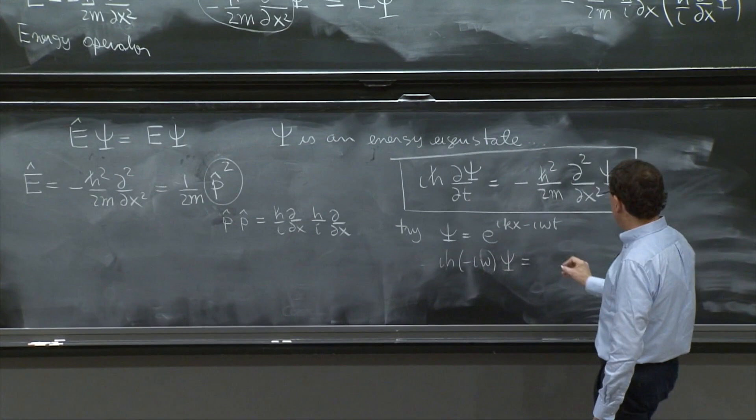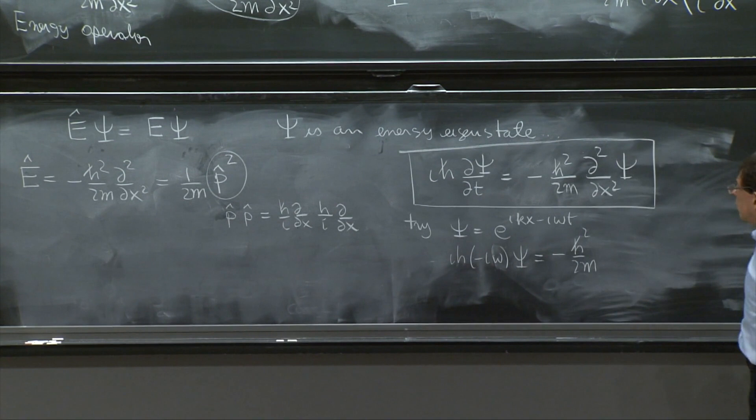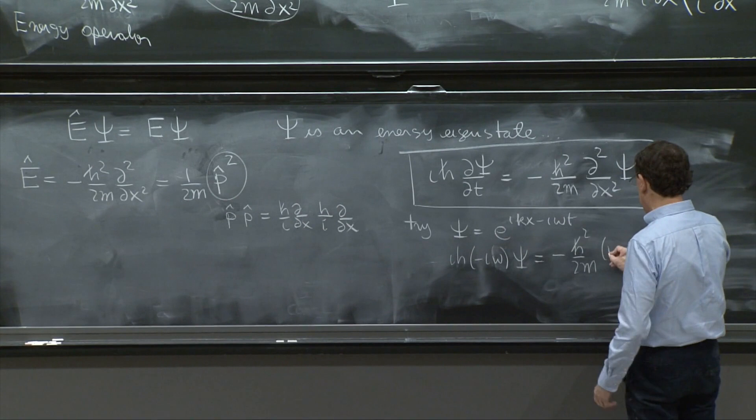And on the right-hand side, we get minus h squared over 2m. And two derivatives with respect to x, and that gives you an ik times another ik, so ik squared, times psi.